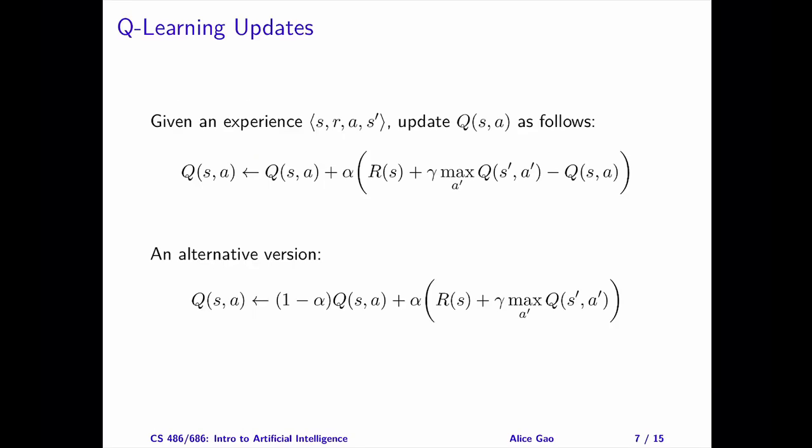Let me introduce the Q learning update rule. Q learning is an example of temporal difference learning. The key idea is to update the Q values proportional to the temporal difference error. Given an experience, a transition from state S to state S' by taking action A, we will update Q as follows.